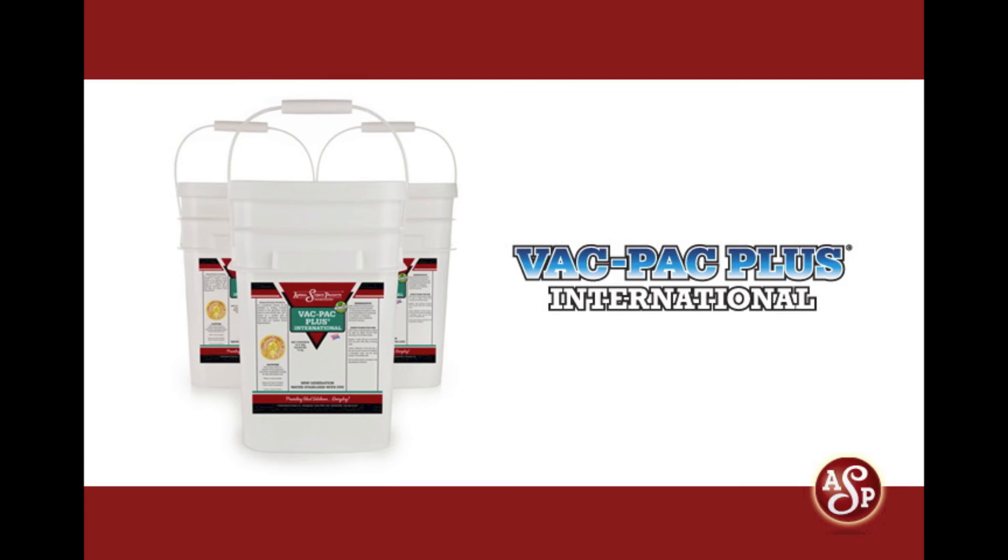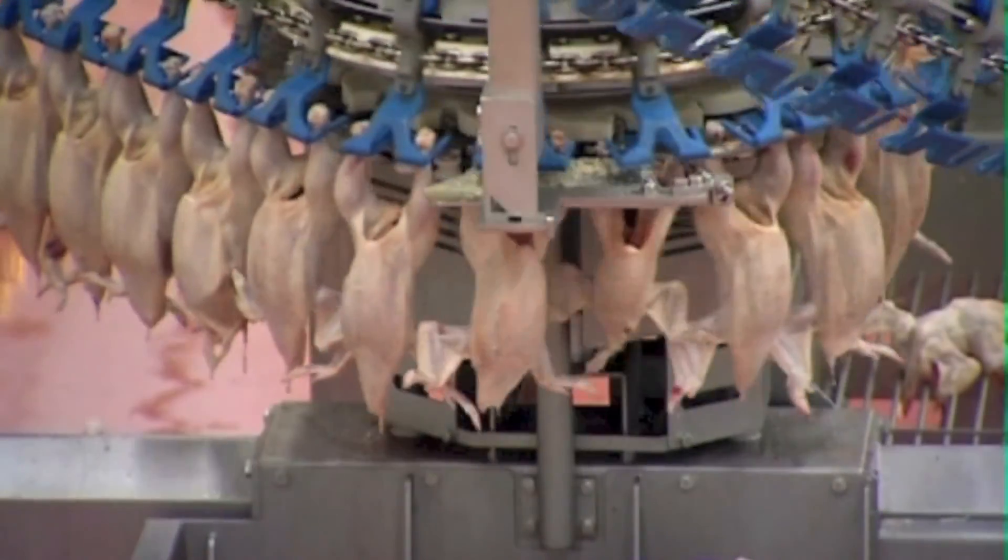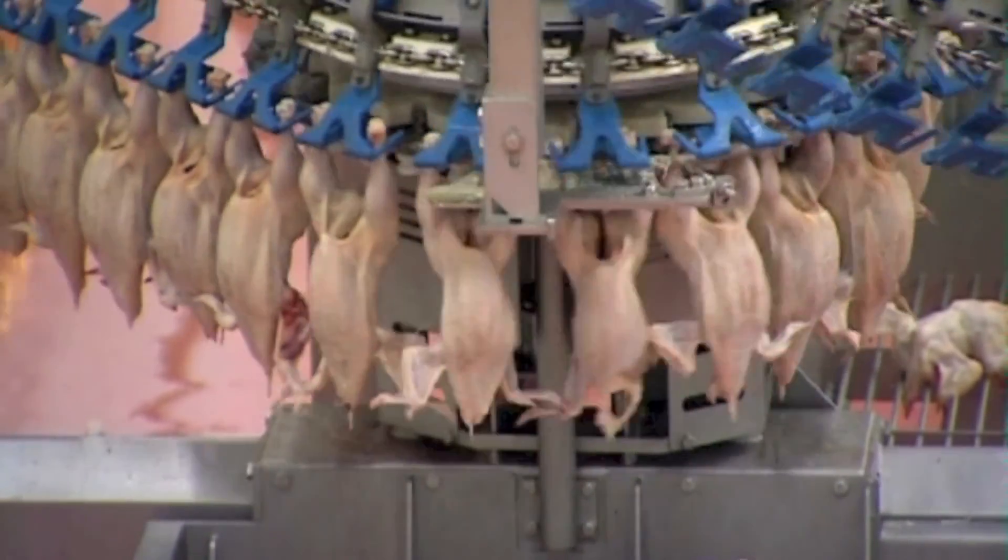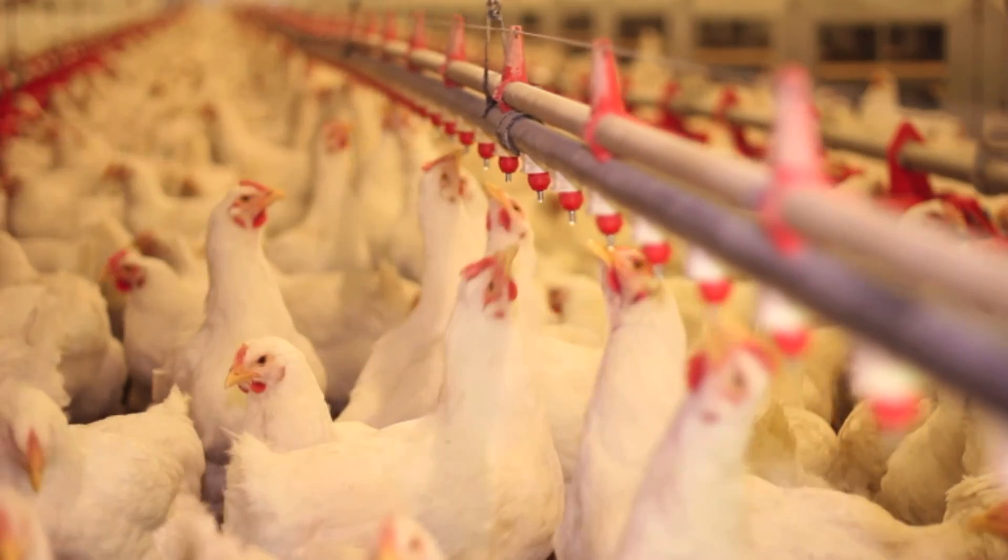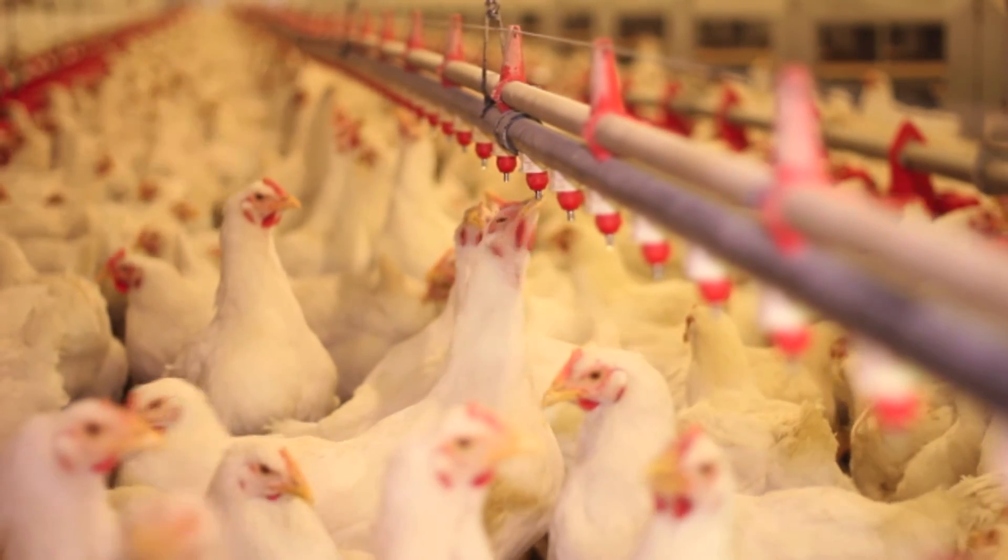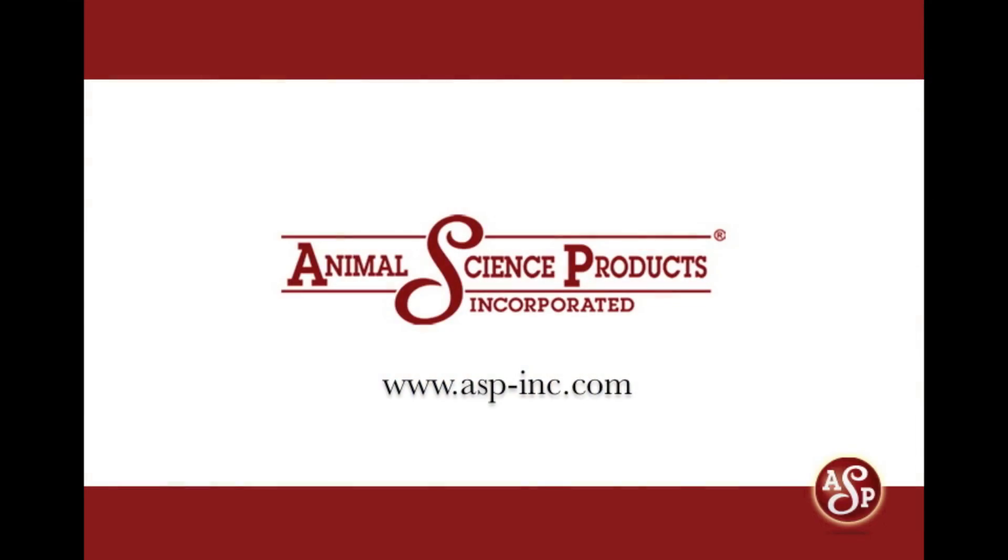VacPak Plus is the ideal solution for stabilizing your vaccines. Adding VacPak Plus helps ensure that your vaccine is well nurtured in the most ideal environment. You'll get all of the doses that you've paid for and all of the doses that your birds require. Remember, safe food comes from healthy poultry. Healthy poultry come from farms with great vaccination programs. And farms with great vaccination programs include VacPak Plus. For more information about VacPak Plus International or any of the ASP family of vaccine stabilizers, you can visit our website at www.asp-inc.com.